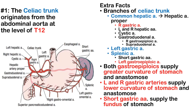Fact 1: The celiac trunk originates from the abdominal aorta at the level of T12. Let's look at the branches of the celiac trunk. You can see the celiac trunk coming off of the aorta, starting right about where this circle is.